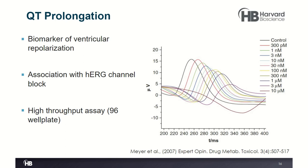One very important measurement from MEAs is QT prolongation, a biomarker of ventricular repolarization that is also associated with hERG channel blockade. As shown in work from Meyer and colleagues (2007), you can very easily identify the T wave using an MEA recording system and screen a wide variety of compounds for dose-dependent effects on QT prolongation. This can also be accomplished with a 96-well plate, allowing multiple candidates to be assessed simultaneously.